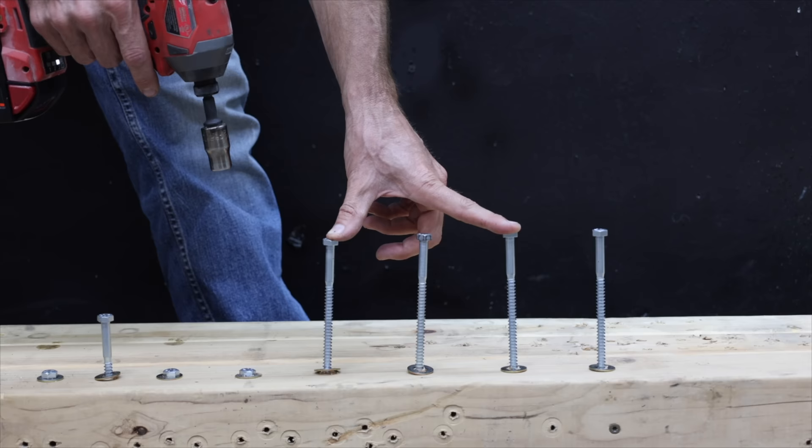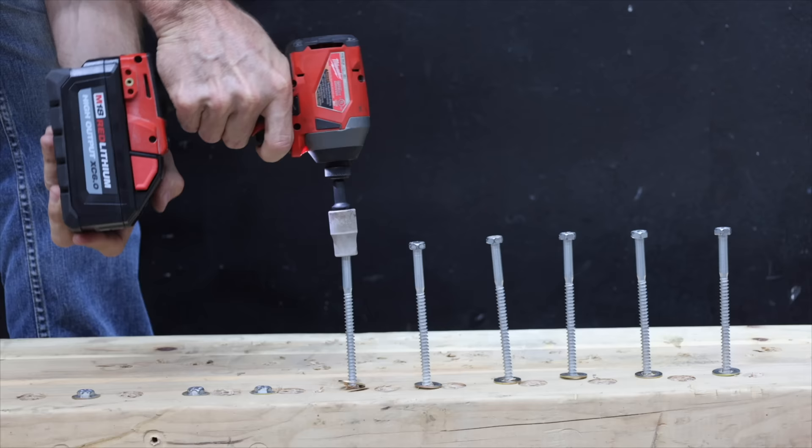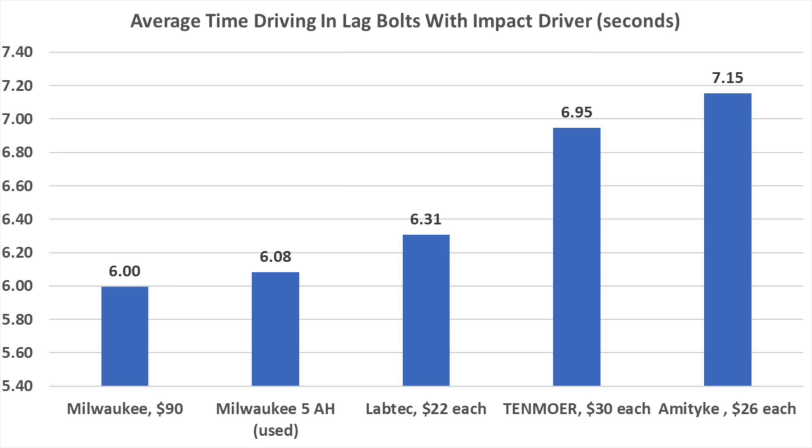I then used an impact driver to compare performance of each battery driving in three lag bolts per battery. The Emityke really struggled driving in the lag bolts averaging over seven seconds per bolt. The genuine Milwaukee drove in three lag bolts without any problem and averaged right at six seconds per bolt. Once again the genuine Milwaukee came out on top and the Emityke finished in dead last place.